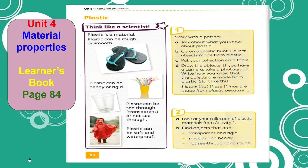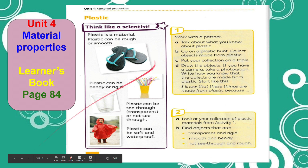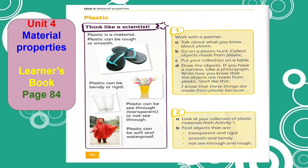What is plastic? It is a material, and plastic can be rough or smooth. It can be bendy or rigid, just like straws. Plastic can also be see-through — when we say see-through, it is transparent — or not see-through. So there are two things you can use to describe plastic: it can be transparent or not see-through, just like this plastic cup.